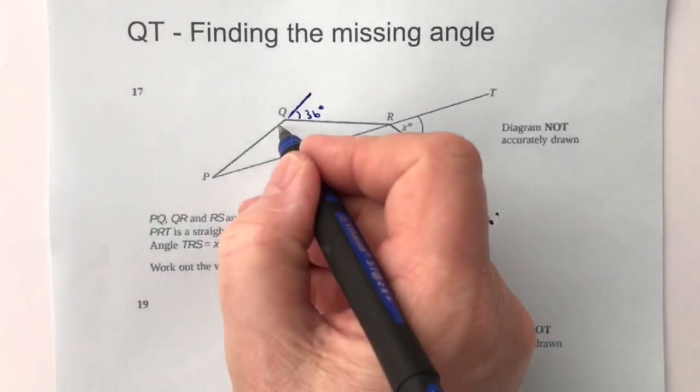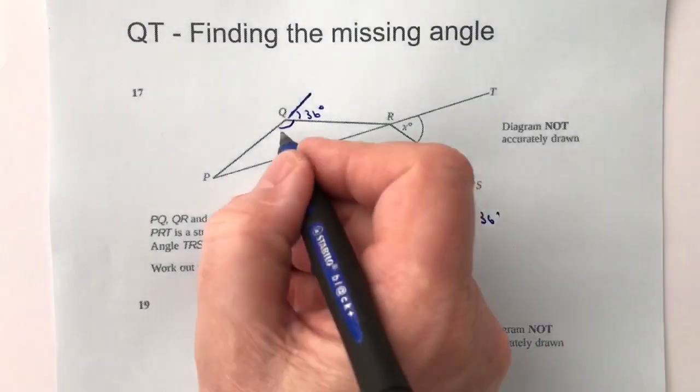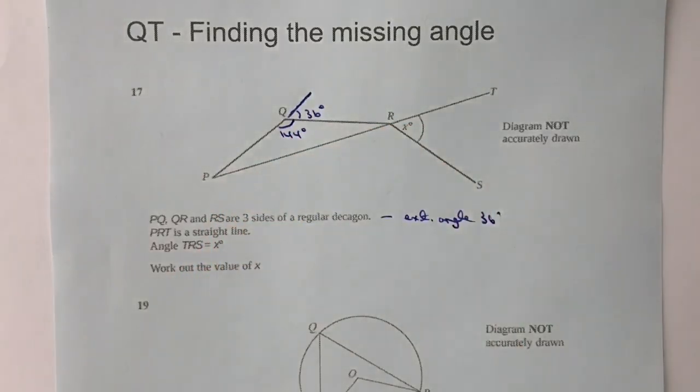that this angle here, which is the top of this particular triangle, is going to be 144 degrees because this PQ and the extension line that I've drawn is a straight line.